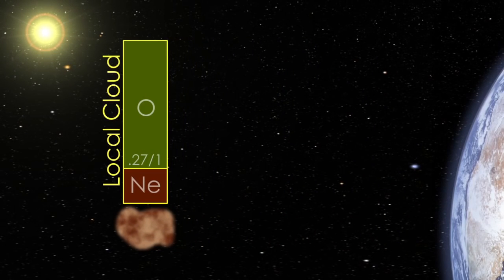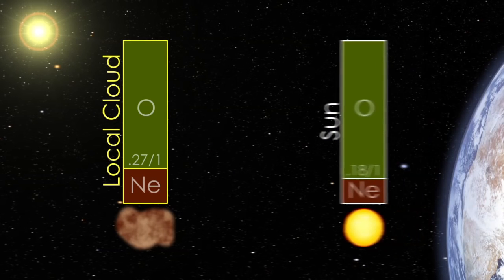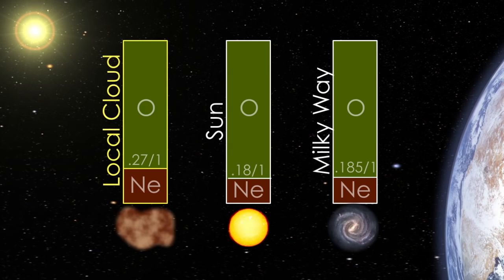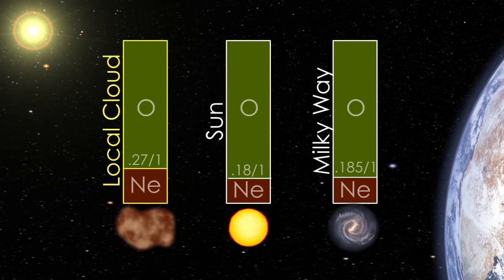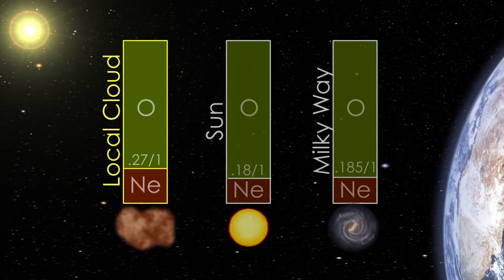The IBEX measurements of heavy interstellar atoms, oxygen and neon, show a difference from the solar system and galaxy as a whole. This puzzle may mean that the sun has moved out of the region where it formed, or that some of the oxygen has been captured by dust in interstellar space.